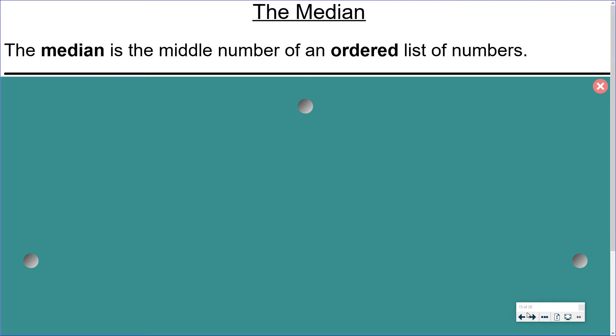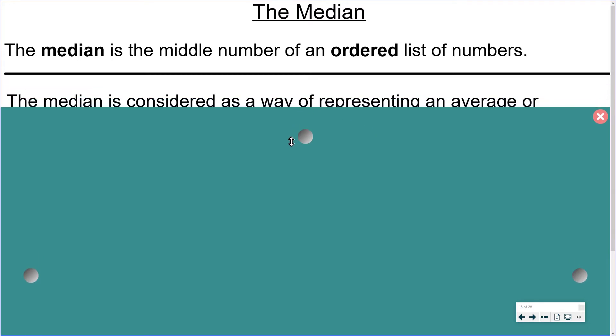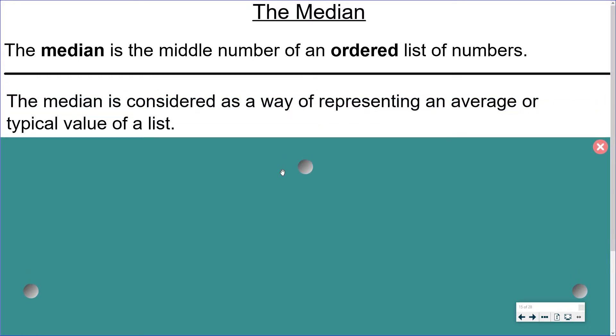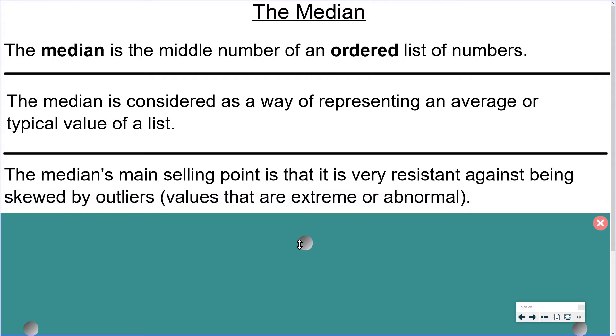The median is the middle number of an ordered list of numbers. The median is considered as a way of representing an average or typical value of a list. The median's main selling point is that it is very resistant against being skewed by outliers. These are values that are extreme or abnormal.